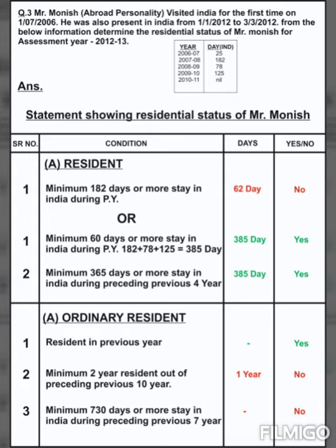Let's start with the first condition for resident. The first condition is: minimum 182 days or more stay in India during the previous year. For assessment year 2012-13, the previous year is 2011-12. So we have to consider the days in that previous year. The total days from the given information: he was present from 1st January 2012 to 3rd March 2012.